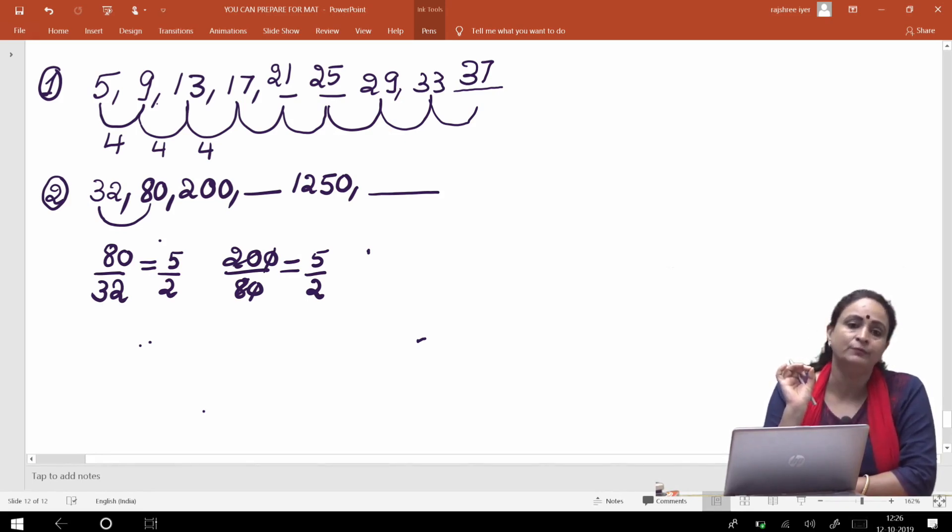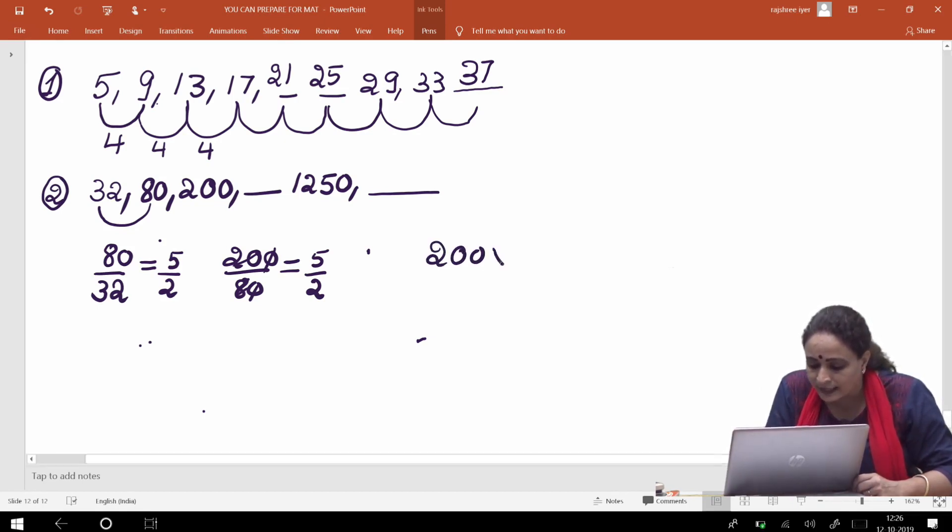Aise series ko hum geometrical progressions kehte hain, hai na? Toh ismein aap dekhenge ki ismein 5 by 2 ka jo ratio ban raha hai, toh agla number mujhe kahan se milega, jo fourth number hai. Toh fourth number kaise mujhe milega, toh I'll write 200 into 5 by 2. So what is the value? It will be equal to 500.